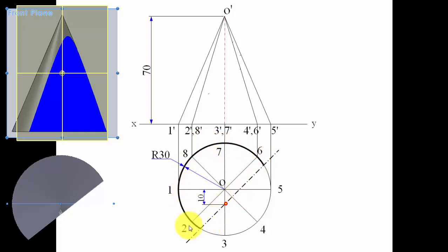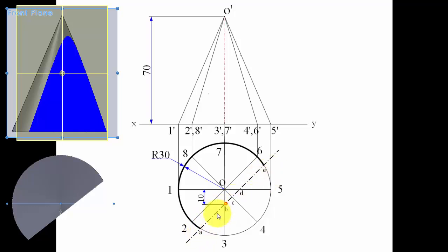Now we write the intersecting points. Somewhere along the circular base between points 2 and 3 we have point A; along generator O3 we have point B; generator O4 gives point C; generator O5 gives point D; and along the circular base between 5 and 6 we have point E. All these intersecting points have their impact in the front view too. Point A lies between 2-dash and 3-dash in the front view — that's the precise location of point A.